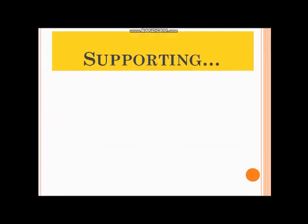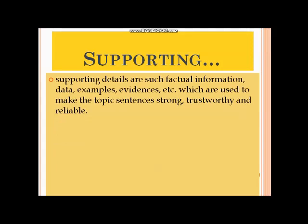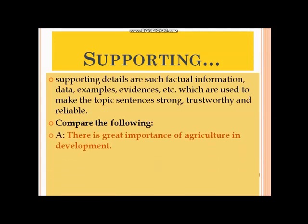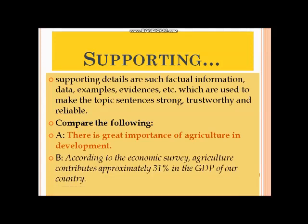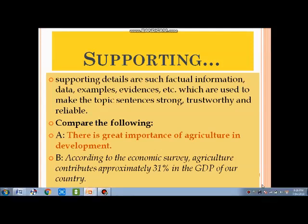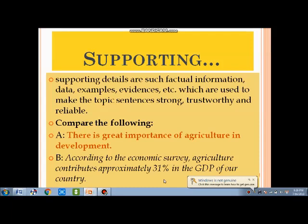Another constituent of a body paragraph is the supporting detail. Whatever ideas we write in our body paragraphs should be supported by examples, facts, and data, so that we can make them reliable — otherwise our readers or examiner may not believe us. For example, 'There is a great importance of agriculture in development' sounds like a vague claim, but 'According to the economic survey, agriculture contributes approximately 31 percent in the GDP of our country' is factual. As far as possible, incorporate data and facts to make your ideas more relevant and reliable.